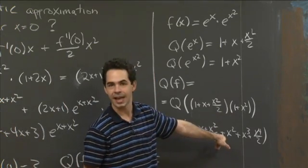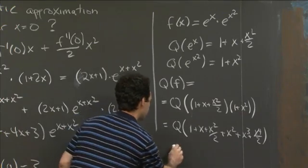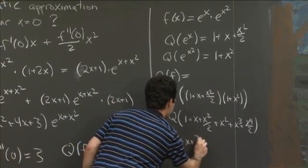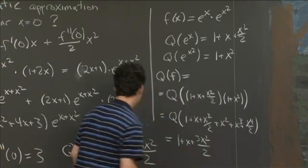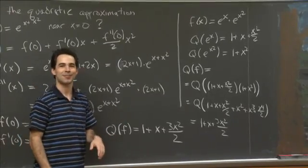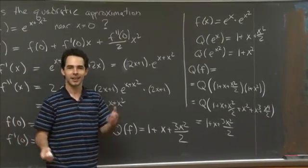And now the quadratic approximation to this we get just by dropping the cubic and quartic terms. So, and OK, and we can add these two square terms together. So this is equal to 1 + x + 3x²/2. All right, and luckily, doing the same problem two different ways, we get the same answer, which is what should happen. So that's that.